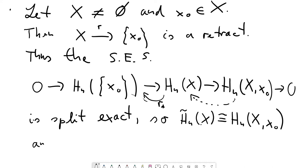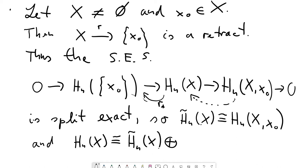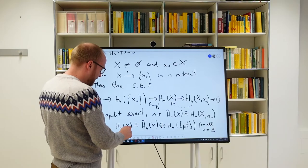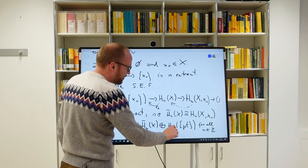From the direct sum decomposition, H_n(X) ≅ H̃_n(X) ⊕ H_n(x₀). So the unreduced homology differs from the reduced homology by the direct sum with the homology of the point. This holds for all n in ℤ, including zero. We only used the first three Eilenberg-Steenrod axioms to conclude these properties.